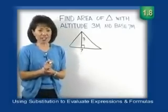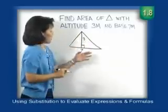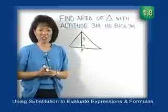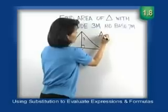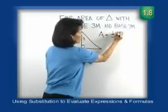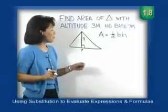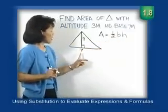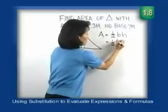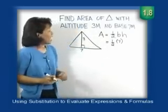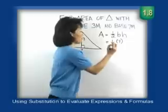Now that we have the diagram, we want to find the area — the portion enclosed by this shape. The formula for the area of a triangle is: Area equals one half times the base times the height. We have all the information needed, so let's substitute. Base is 7, so the area of our triangle is one half times 7, and the height — another word for altitude — is 3.